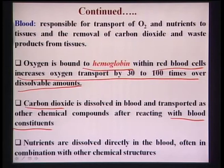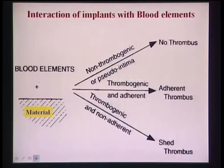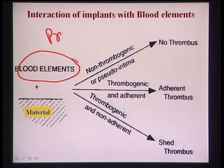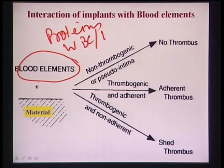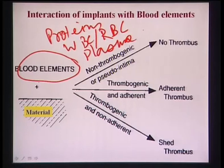The four major blood elements are proteins, WBCs, RBCs, and plasma. More specifically: erythrocytes, leukocytes, proteins, and plasma. When a material reacts with blood, blood is a combination of all these, so the material will be interacting with all these molecules.